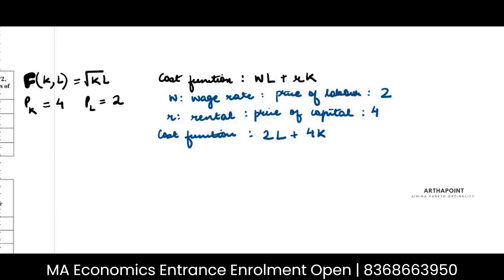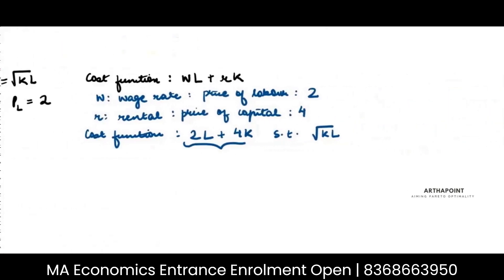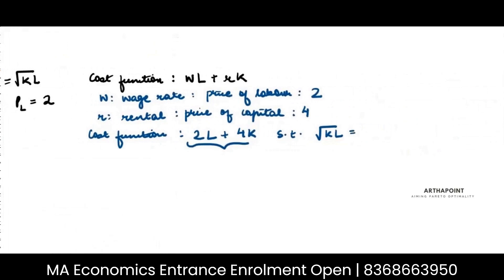Subject to the production function. So I want to minimize this subject to what is my production function? Root KL. And I want to produce a given level of output. What is the output that I want to produce? I want to produce two units of output. That is what my aim is. So subject to root KL is equal to 2.